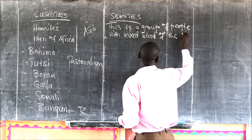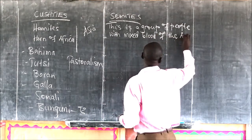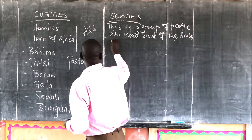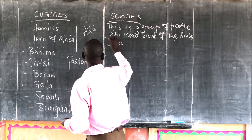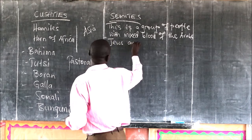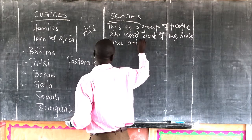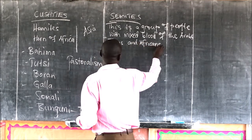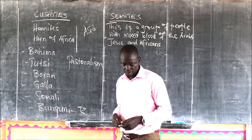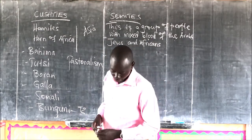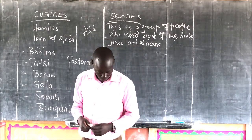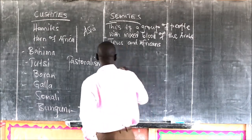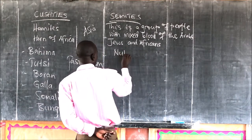This is a group with mixed blood: we talk of the Arabs, the Jews from Asia, and Africans. You find many of these people across Africa, and in countries like Sudan for instance. When we talk of the Nubians, we have them in Uganda.